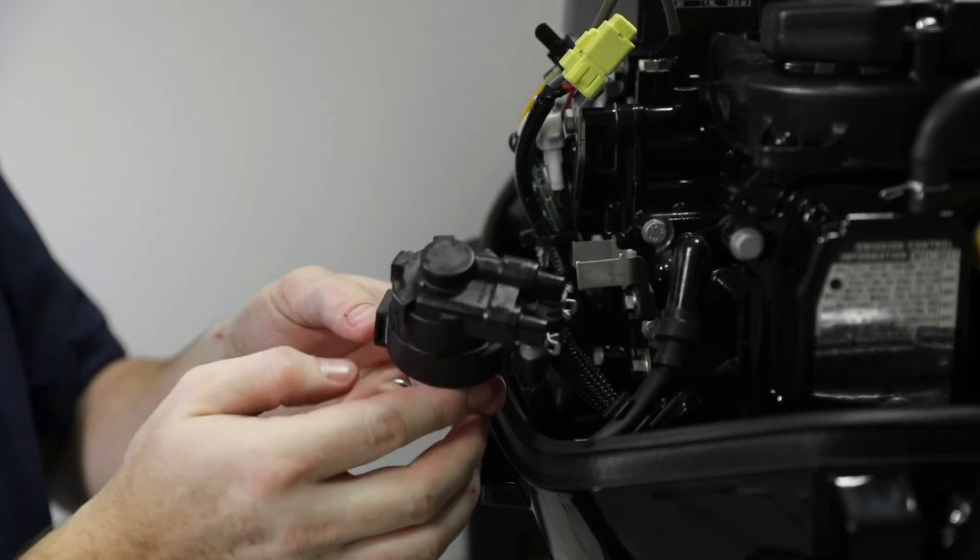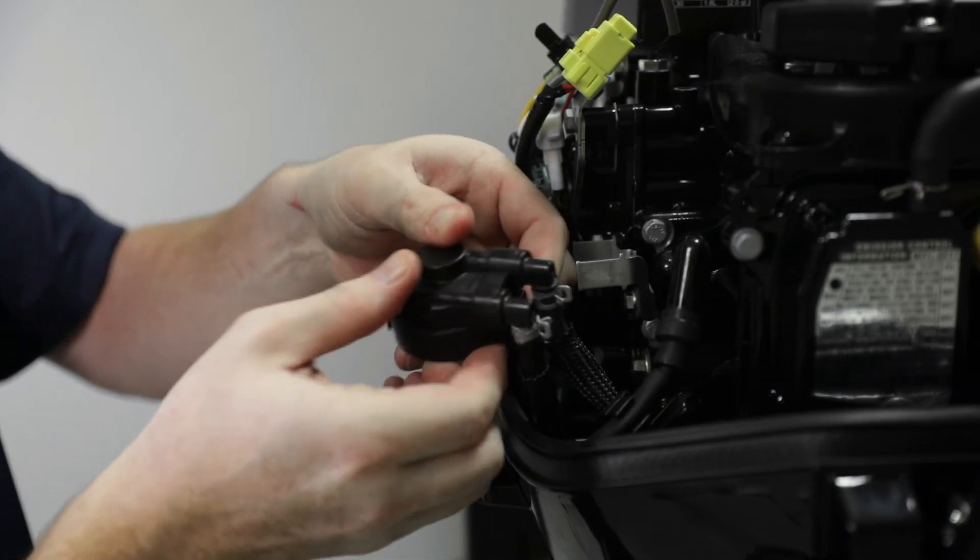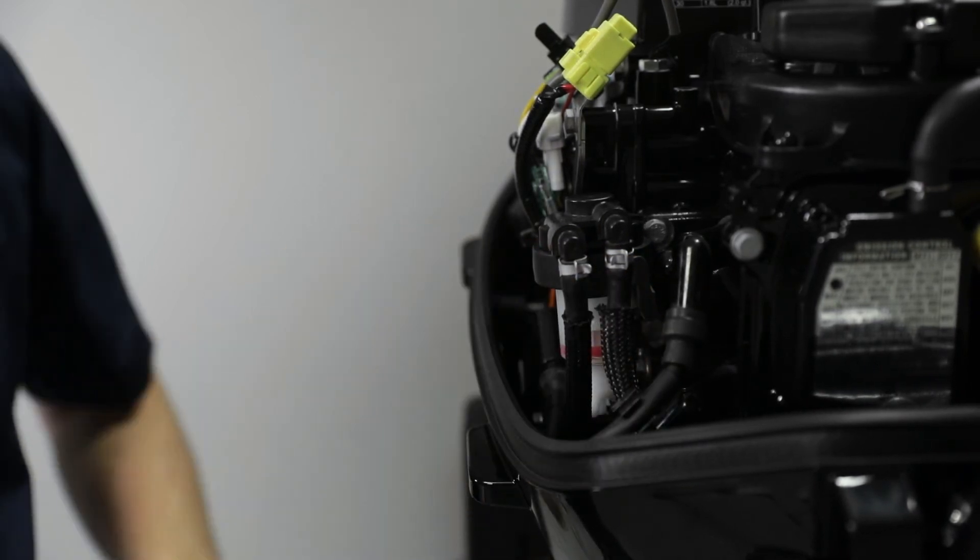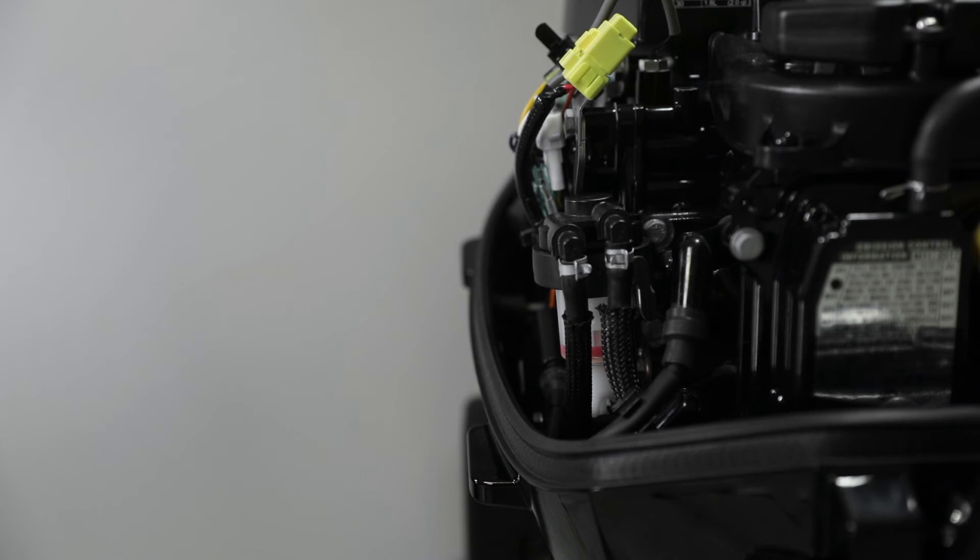Verify the rubber mount is properly aligned with the filter housing and install the rubber mount. Install the filter assembly onto the mounting bracket and prime the engine fuel system. Inspect the fuel filter area for fuel leaks and repair as needed.